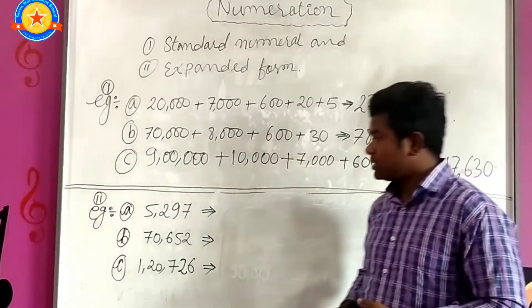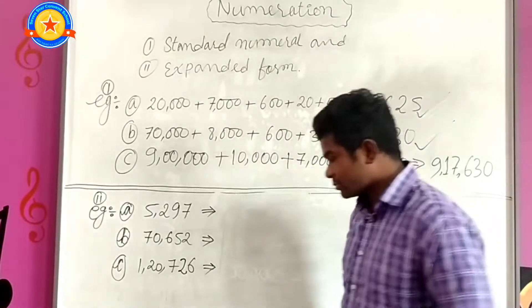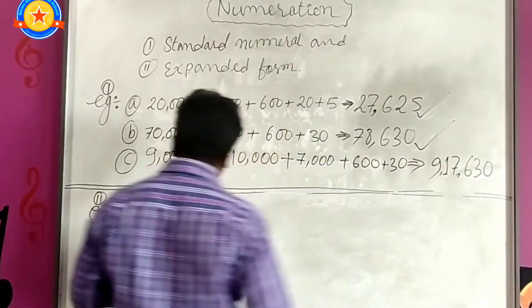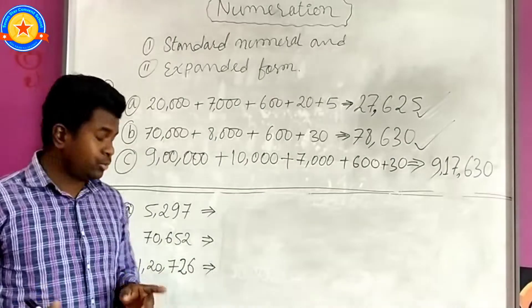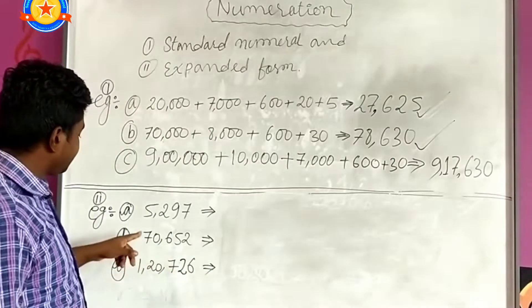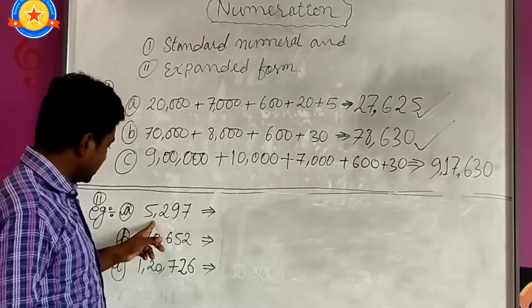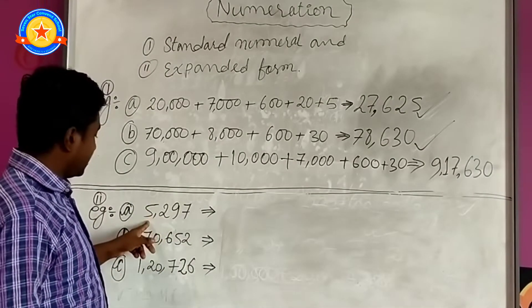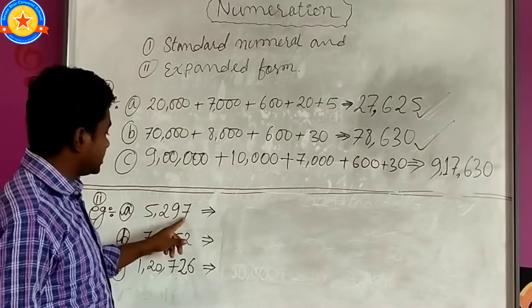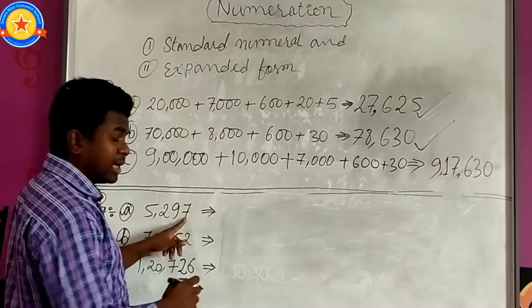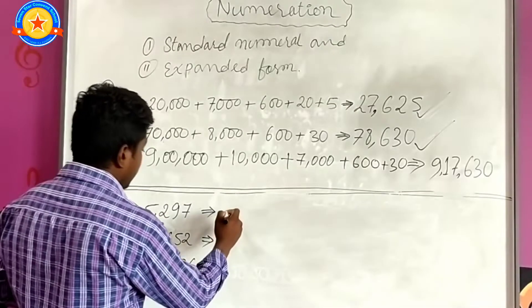Now let's do the second one: expanded form. How we have to write? Here the number is 5,297, and now we have to expand.